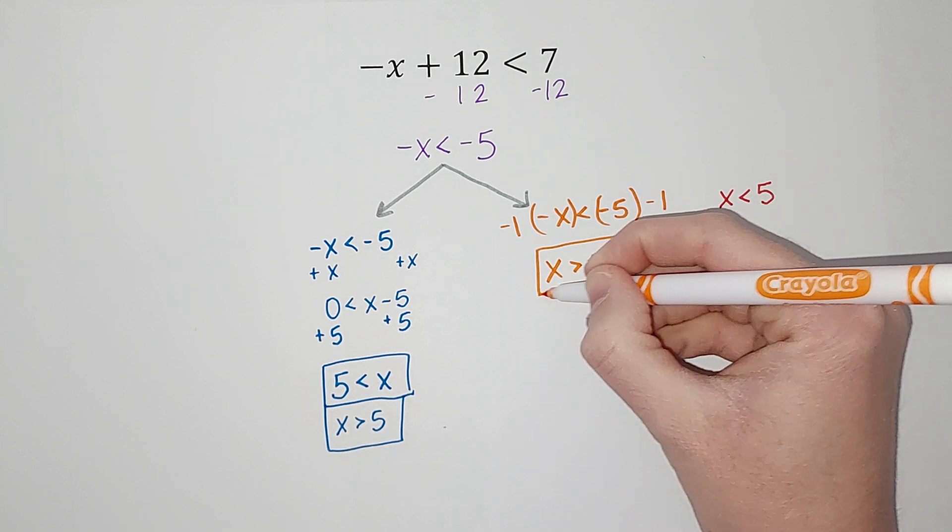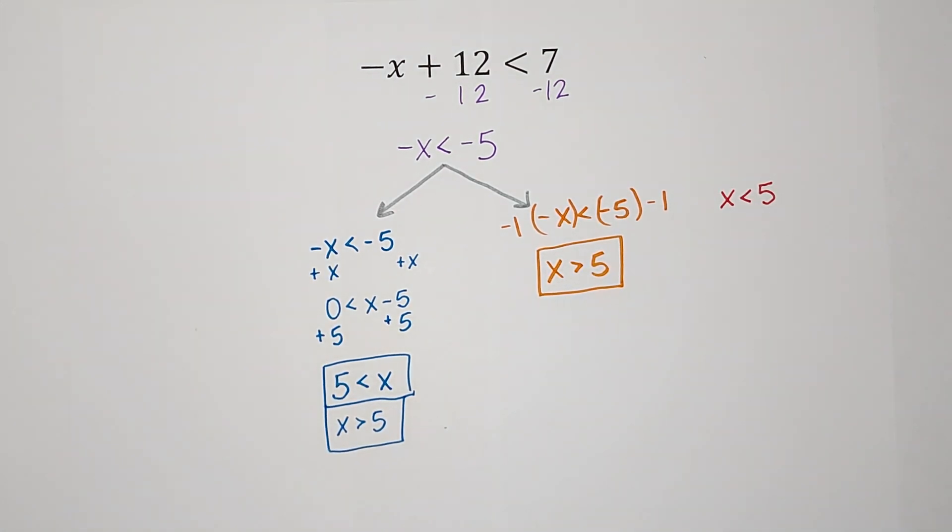So remember, whenever you multiply or divide by a negative when you are doing inequalities, flip the sign to make sure it stays true. Hopefully that made sense. I will link some other inequality videos if you need them and talk to you later. Bye.